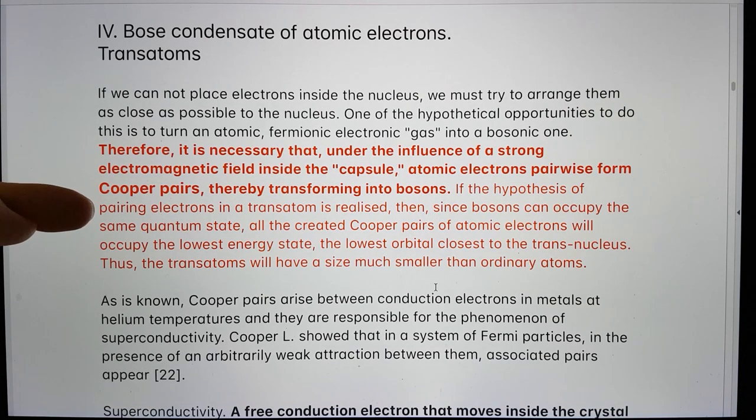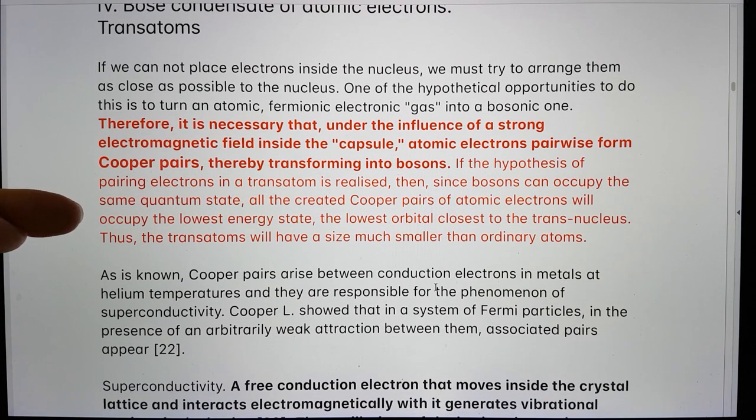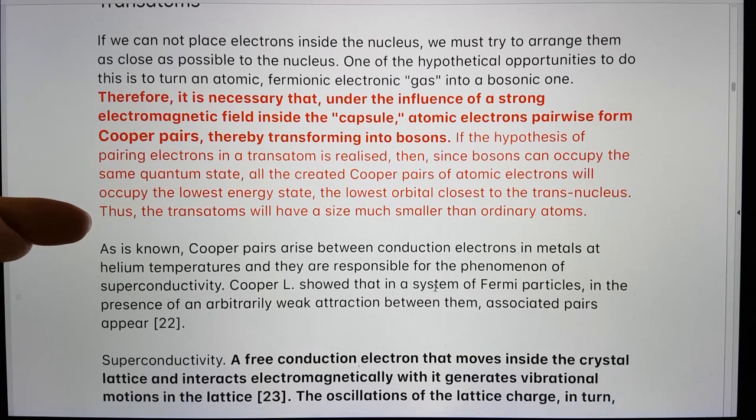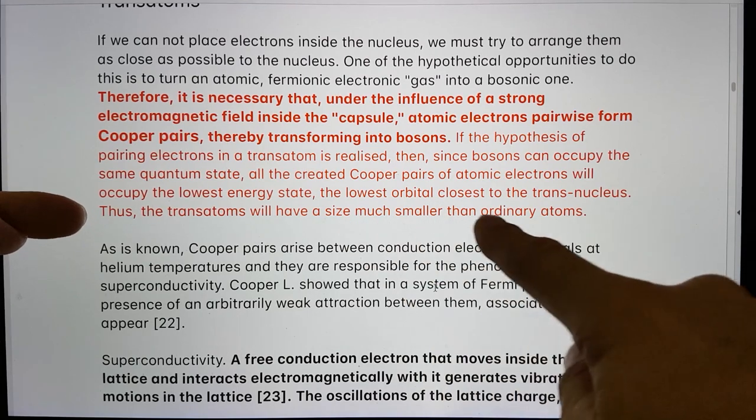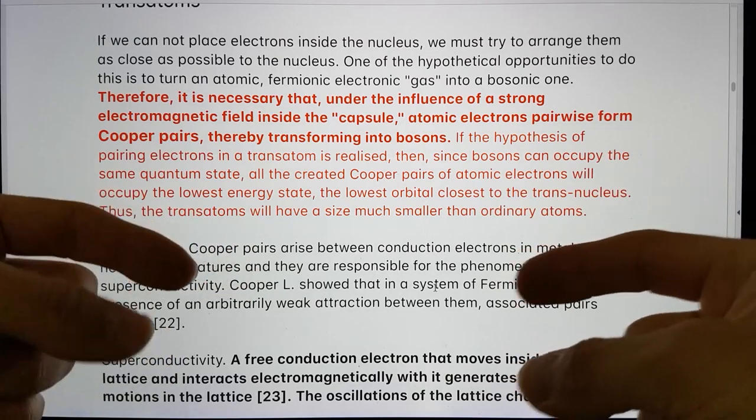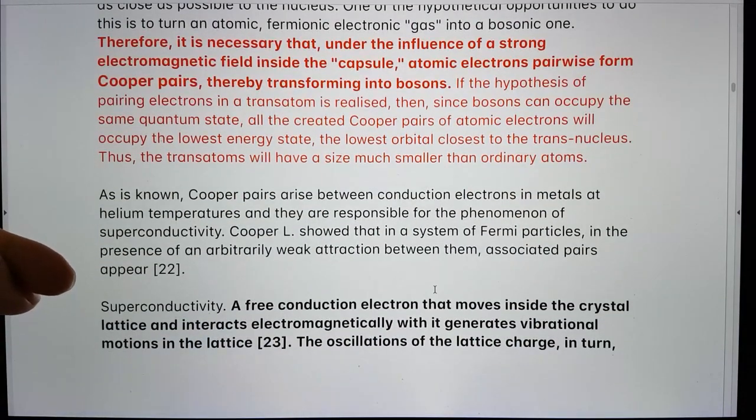If the hypothesis of pairing electrons in the transatom is realized, then since bosons can occupy the same quantum state, all the created Cooper pairs of atomic electrons will occupy the lowest energy state, the lowest orbital closest to the transnucleus. Thus, the transatoms will have a size much smaller than ordinary atoms. So this is condensing matter.